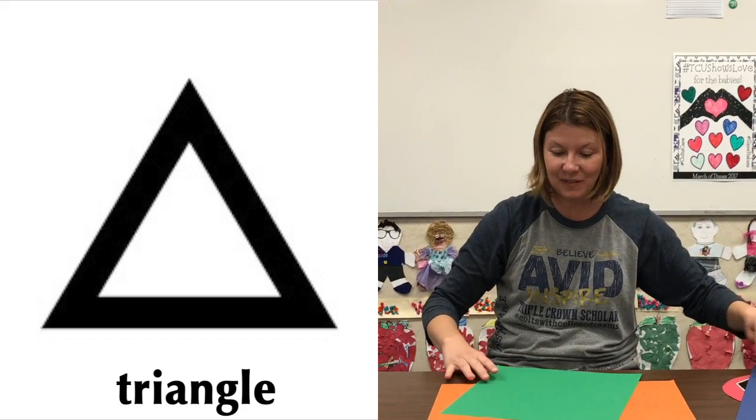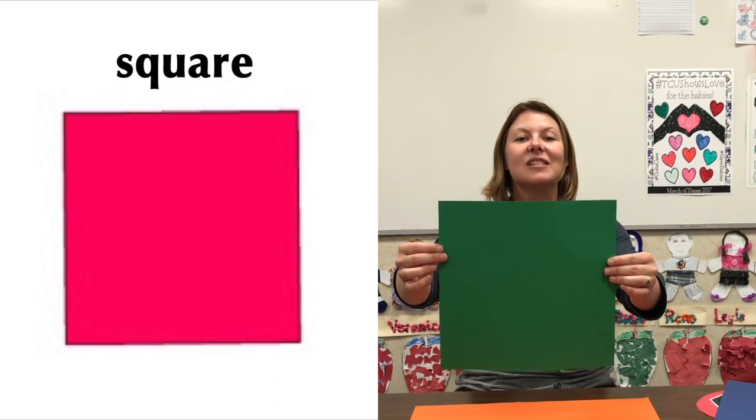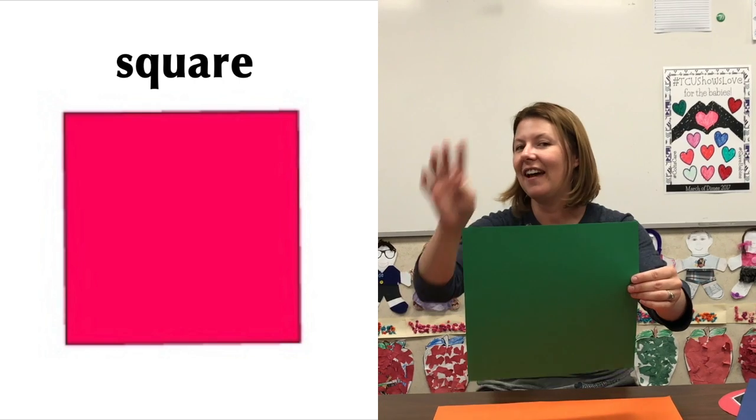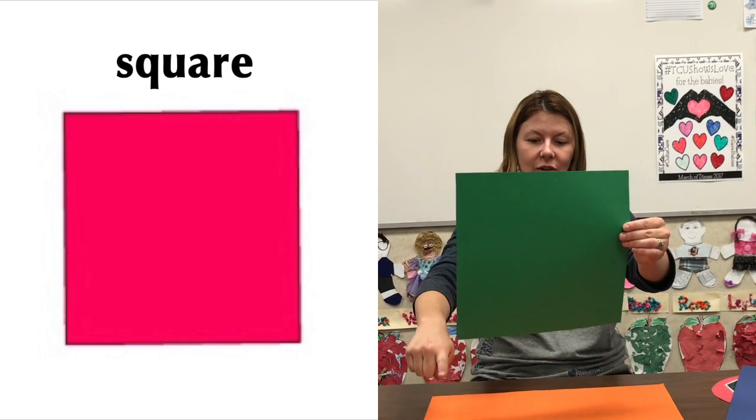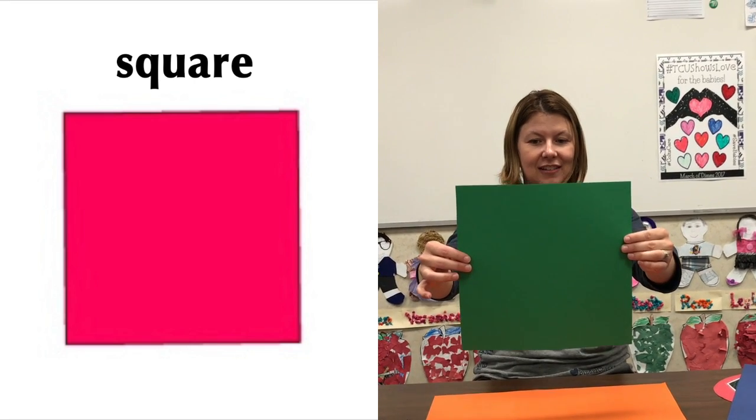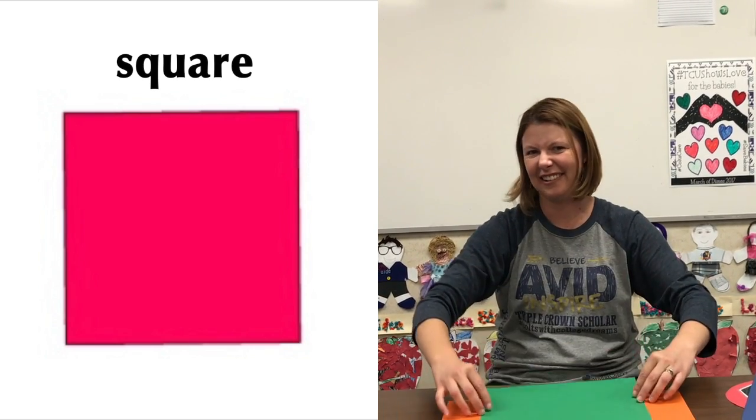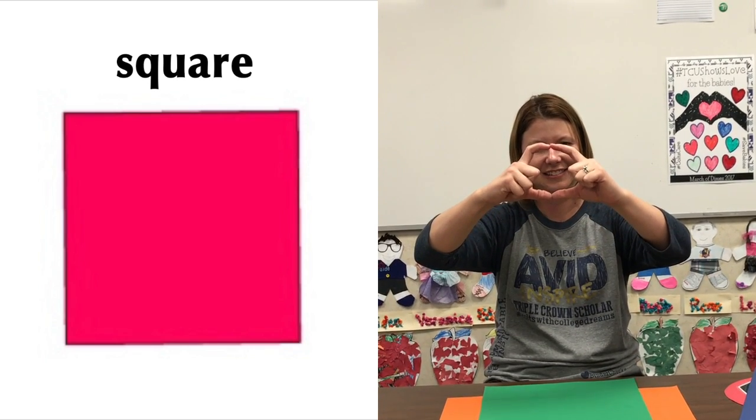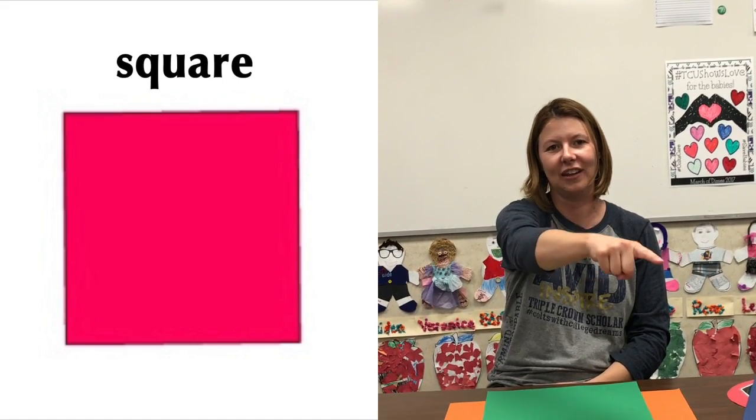Our next flat shape is a square. Let's say square. Squares have four equal sides. One, two, three, four. Four sides. Can you make a square with your hands? That's hard to do, huh? Make a square like this. Or you can draw it in the air. One, two, three, four.